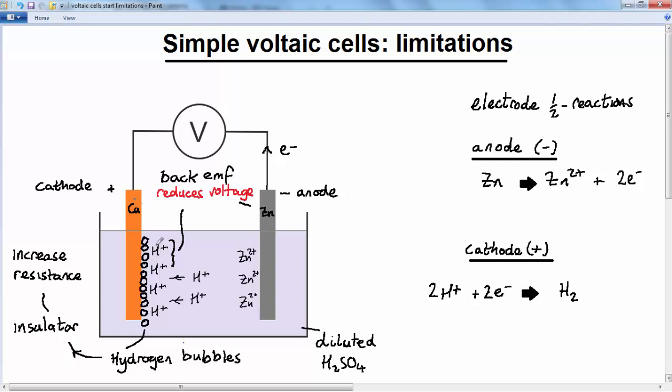And then on top of that, a layer of hydrogen ions builds up, which opposes the EMF produced by the zinc-copper cell. So the net result is that this type of cell is very rapidly rendered impractical.